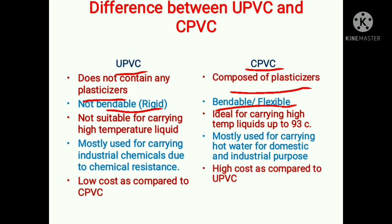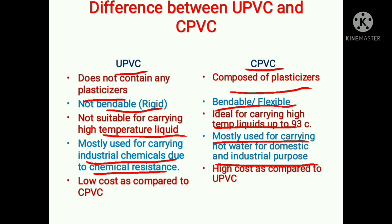UPVC pipes are not suitable for carrying high-temperature liquid — that is, liquid above 45 degrees Celsius. Whereas CPVC pipes are suitable for carrying high-temperature liquid up to 93 degrees Celsius. UPVC pipes are mostly used in industries for handling different chemicals because they are chemical resistant. CPVC pipes are used in both domestic and industrial settings — you can transfer potable water through them, and they are also suitable for high-temperature applications like bathrooms and geysers.